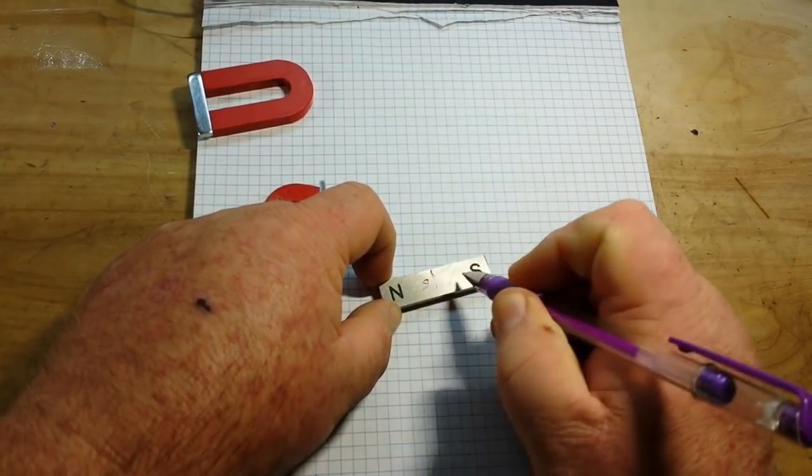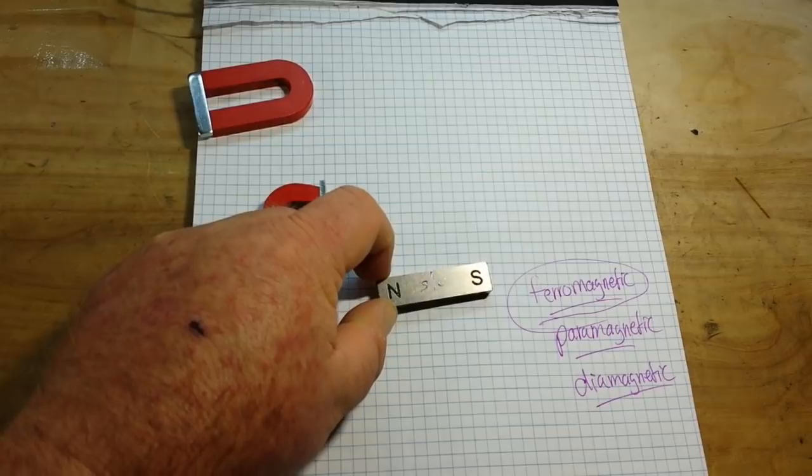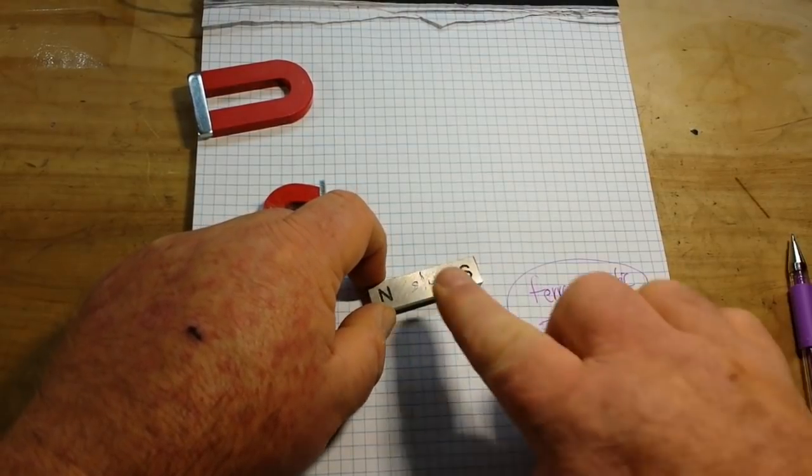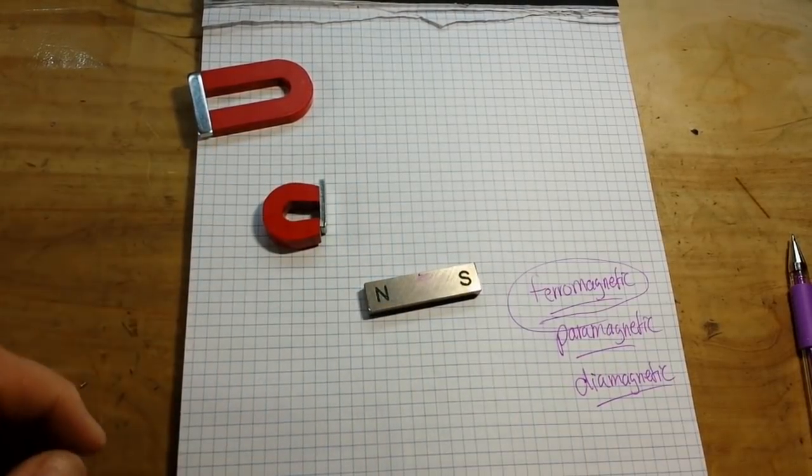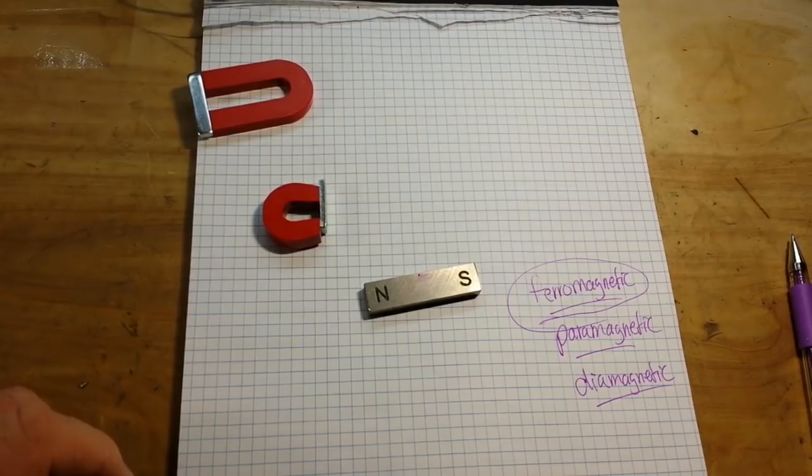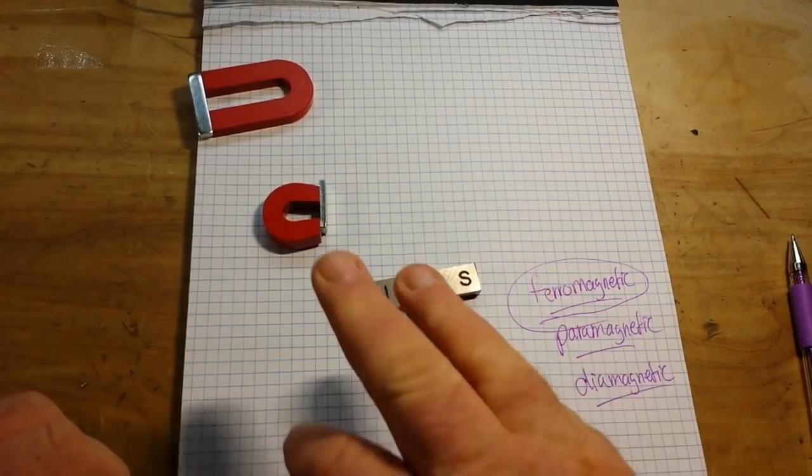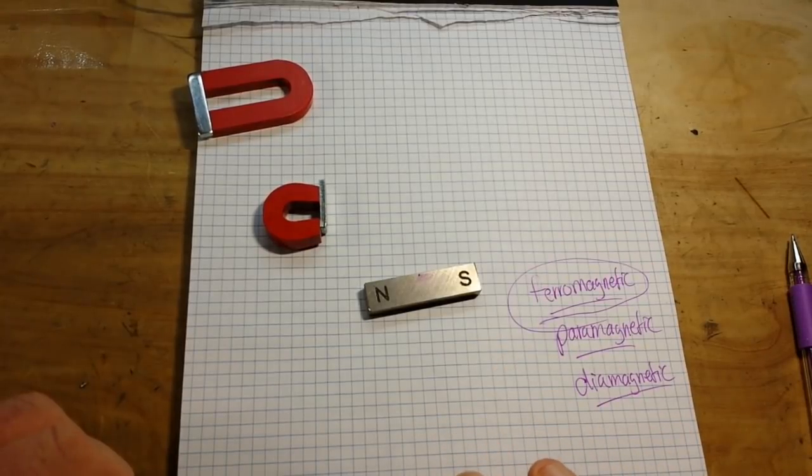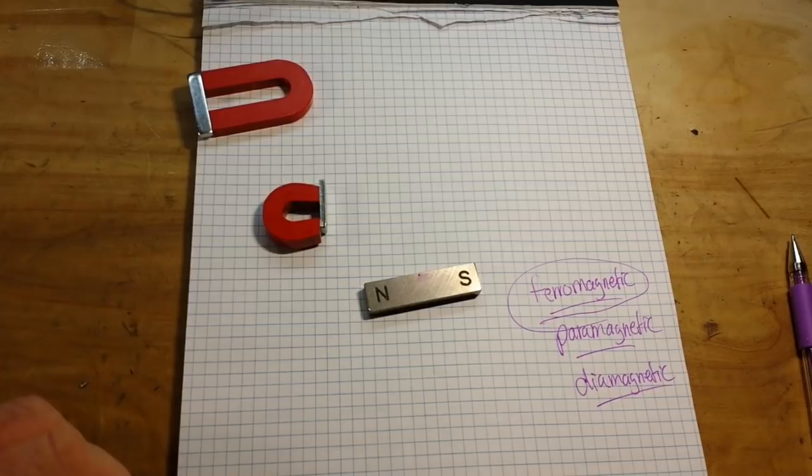Another cool thing is that the flux, the magnetic lines of force, run from one pole to another pole. And we can show that quite easily with this bar magnet.